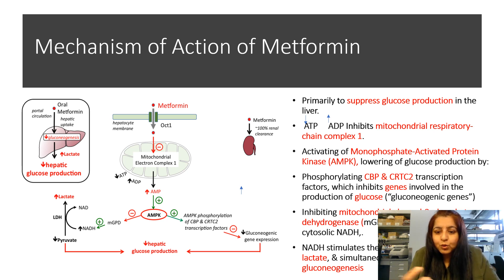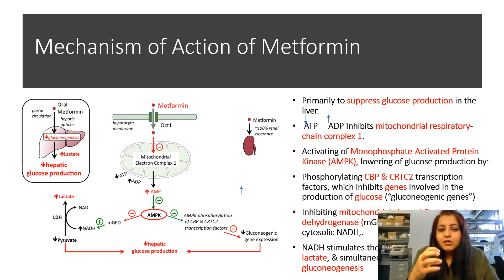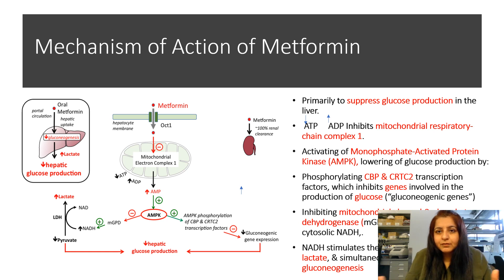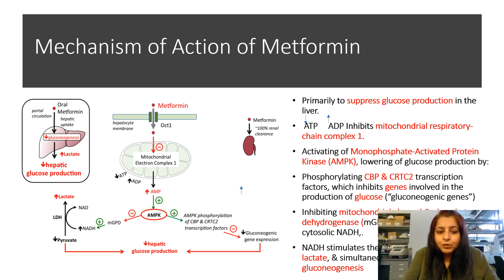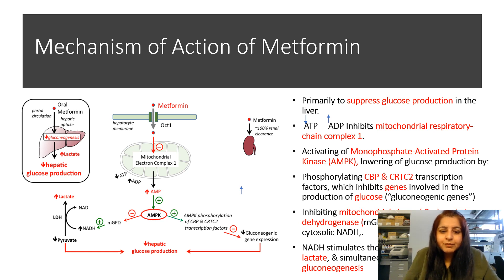How does metformin regulate blood glucose levels? Metformin actually inhibits glycogenesis and gluconeogenesis — glucose production from non-glucose substrates. When metformin enters the portal circulation after oral administration, it is absorbed into the hepatocytes of the liver by the transporter OCT1.